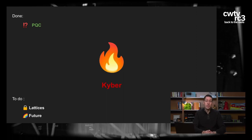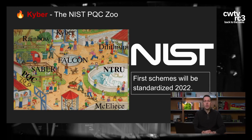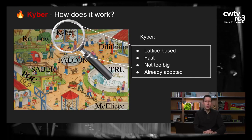Jetzt möchte ich über Kyber reden. Kyber ist ein Post-Quantum-System, und die asymmetrische Verschlüsselung wird angegriffen werden. Also müssen wir eine neue bauen – einen neuen Zoo, wo Leute wieder hingehen können. Die Standardisierungsorganisation NIST hat vor ein paar Jahren um neue kryptographische Verfahren aufgerufen, die gegen Quanten-Kryptographie sicherer sind. Die ersten Schemen davon werden wahrscheinlich bald im Jahr 2022 standardisiert werden. Wir wollen ein Schema anschauen, das bald standardisiert werden soll, und das ist Kyber.